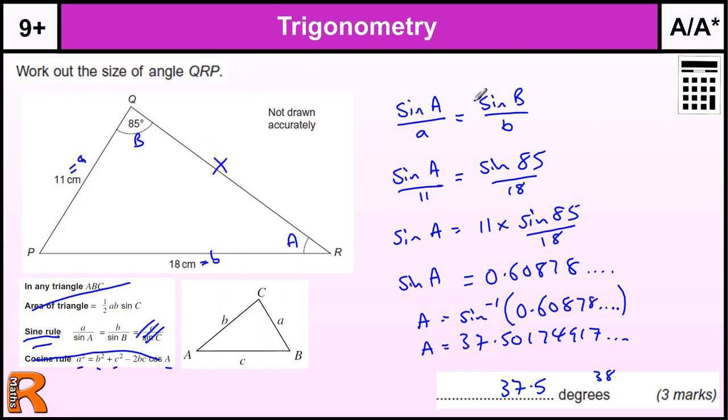Now, you would get one mark for getting to that stage there, where you put all the numbers into the formula. So that's one method mark for that stage. Getting to the 0.608 is another method mark, and your final mark for your answer is 37.5.